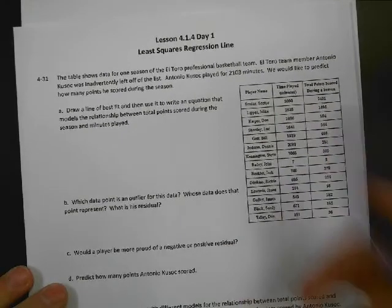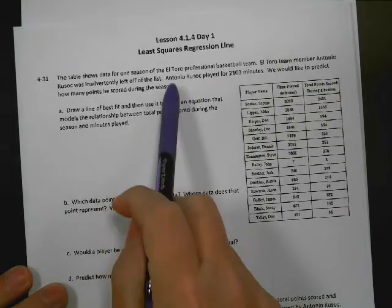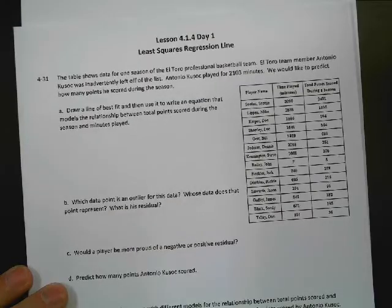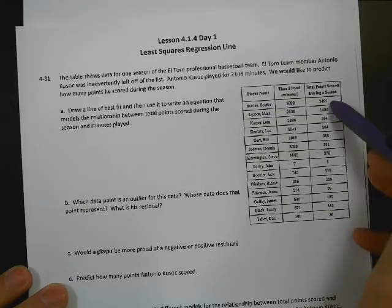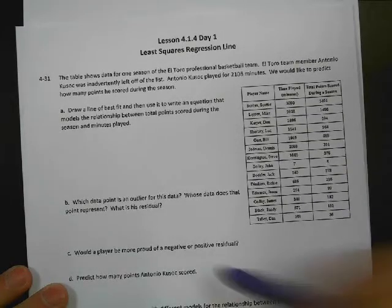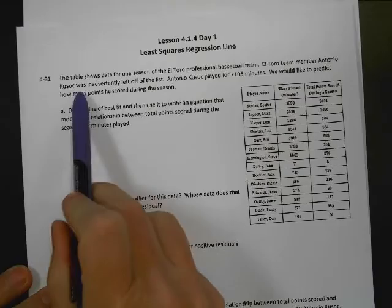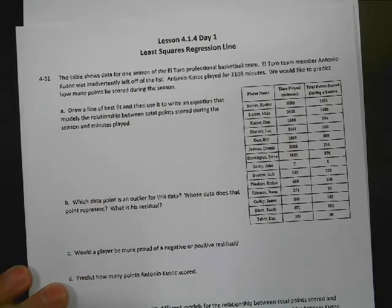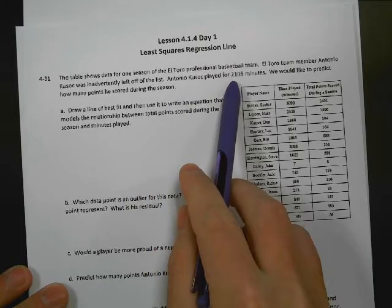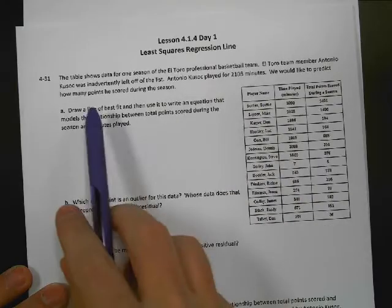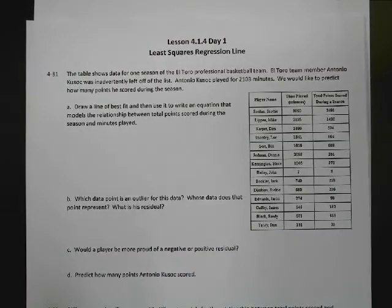So today we've got a table of data over here, and this shows one season of the El Toro professional basketball team. They've got all these team members. They have how many minutes that they played, and then how many points that they scored during the season, in those minutes that they were playing. We've got a little bit of a problem. Antonio Cusick was inadvertently left off the list. So we know that Antonio Cusick played 2,103 minutes, and we would like to predict how many points he scored during the season.